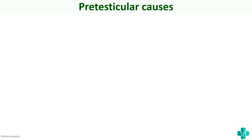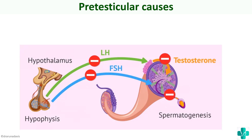First we will see the pre-testicular causes. The hypothalamus produces gonadotrophin releasing hormone (GnRH) which acts on the pituitary to produce two important hormones required for spermatogenesis: FSH and LH. LH acts on the Leydig cells to produce testosterone, whereas FSH acts on the sperms and causes spermatogenesis. If there is any problem with the hypothalamus or pituitary, there will be decreased levels of LH and FSH, which in turn will hamper spermatogenesis. All conditions causing male infertility due to a decrease in FSH, LH, or GnRH are grouped under pre-testicular causes.